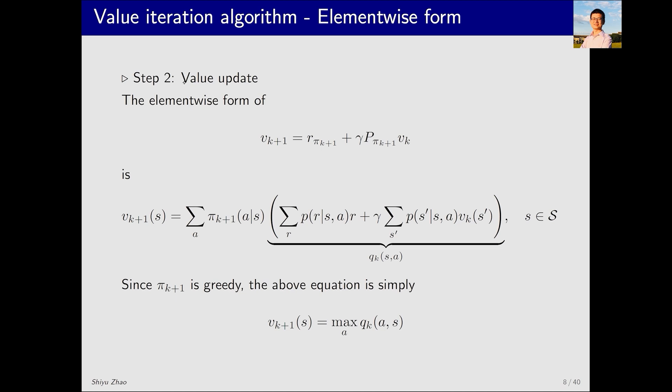The second step is value update. This is its matrix-vector form. For each state s, we can write out its element-wise form. Similarly, from this v_k, we can solve for q_k. Just now we obtained π_k+1. We can substitute it in. The result will actually be very simple because the probability in π_k+1 for taking the action that corresponds to the largest q_k is 1, and all others are 0. So, the final v_k+1 is just the largest q_k.